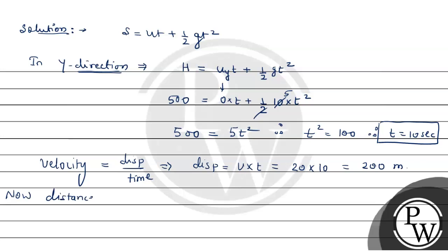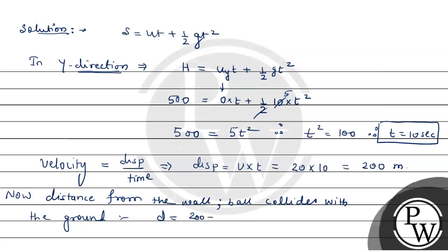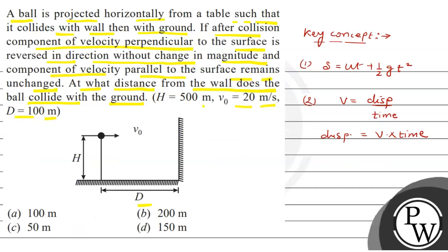Now we calculate the distance from the wall where the ball collides with the ground. Under the given conditions, small d equals 200 minus capital D. Since capital D is 100 meters, small d equals 200 minus 100 equals 100 meters. So option A, 100 meters, is the correct answer. I hope you understood it well. Best of luck, thank you.